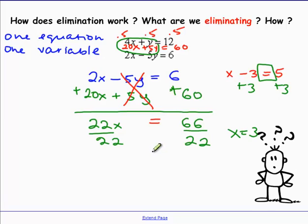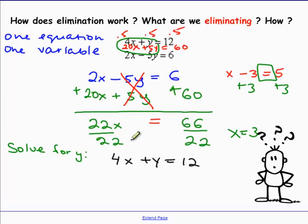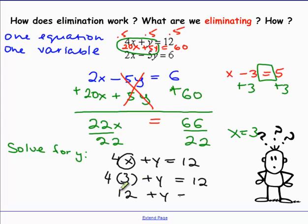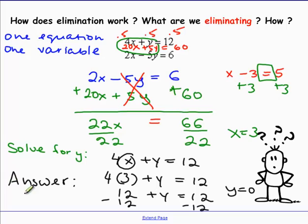We're solving a system of two equations, so we still need to find both x and y. To solve for y, we go back to one of our equations — I'll use the first one: 4x plus y = 12. Substituting x = 3, we get 12 plus y = 12. Subtracting 12, we get y = 0. So the answer is (3, 0).